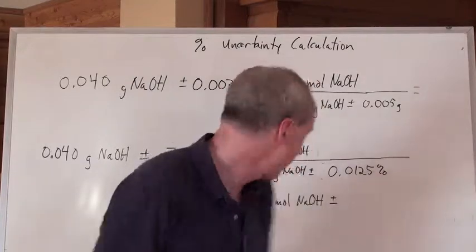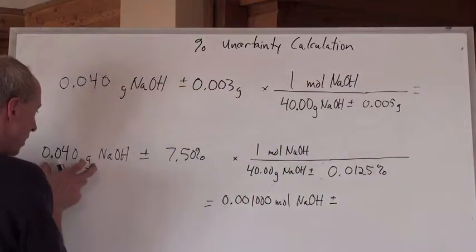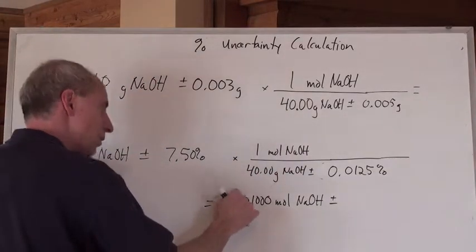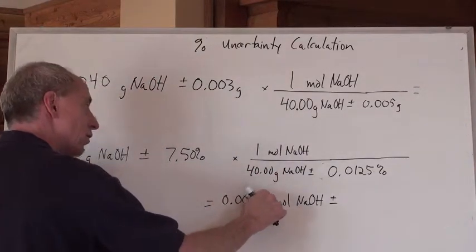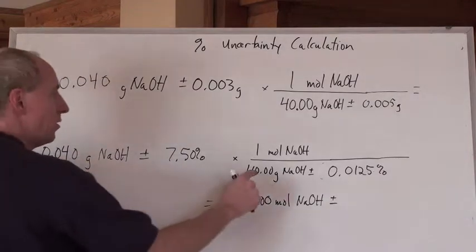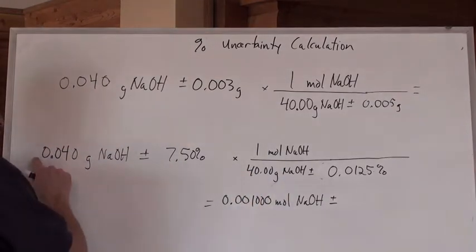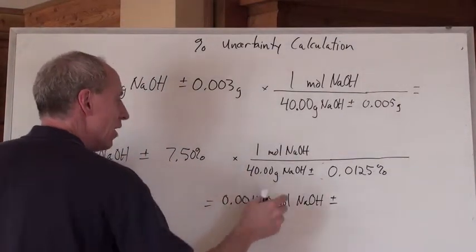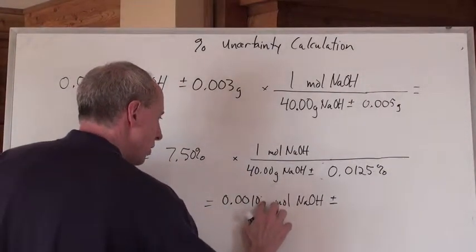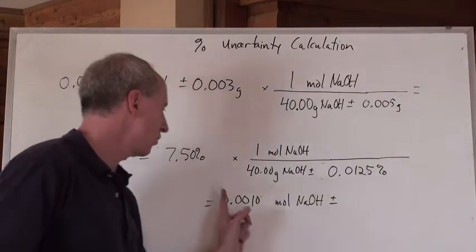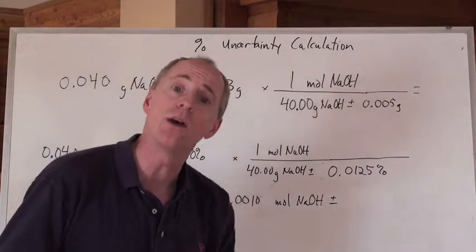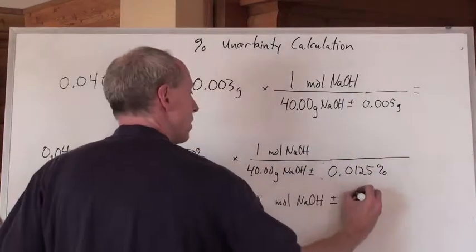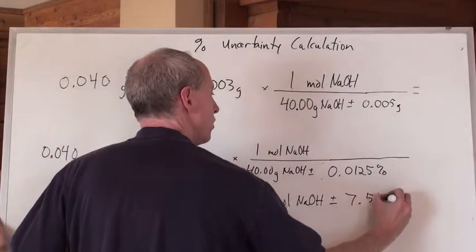What do you do with those percents now? Well, first of all, you do the calculation. That divided by that. Just do your calculation like normal and you get 0.001, how many sig digs there? Three sig digs there? No, there's two significant digits in that mass right there. And there's four here, so you're going to keep two significant digits. So the answer is 0.010 moles, plus or minus. Now what are you going to do? Add the two percents together. So when you add that number to that number, you get 7.5125%.